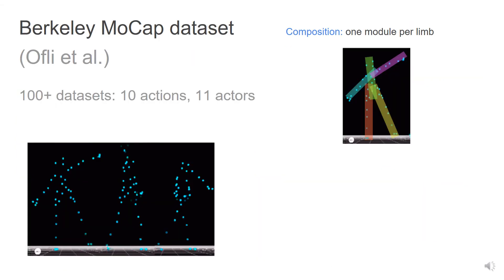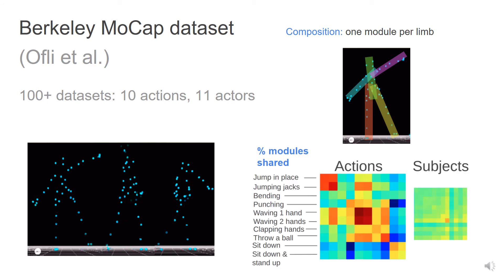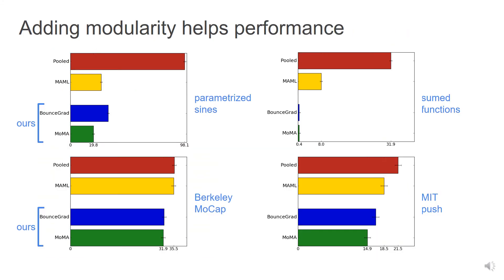For the Berkeley motion capture dataset, consisting of subjects performing different actions, our composition rule involves predicting each limb with a single module. We observe that modules don't depend on the subject, and are shared more between similar actions. We also show better performance thanks to exploiting the structure in the domains.